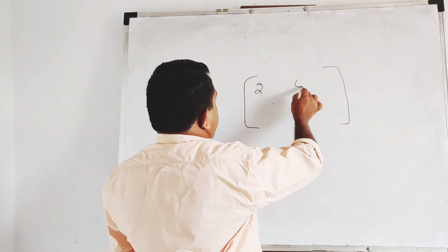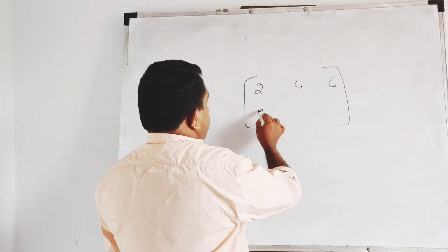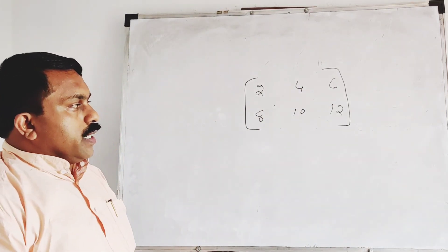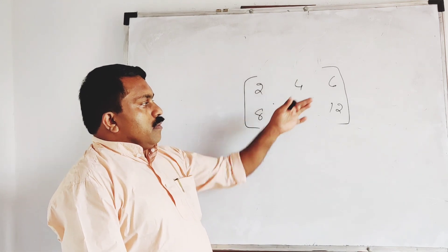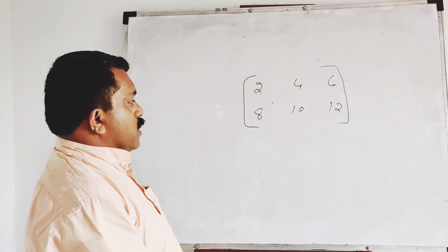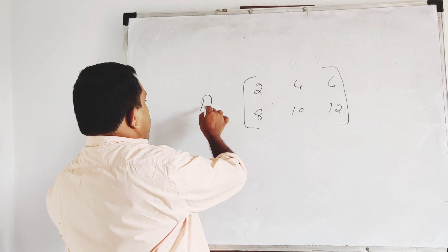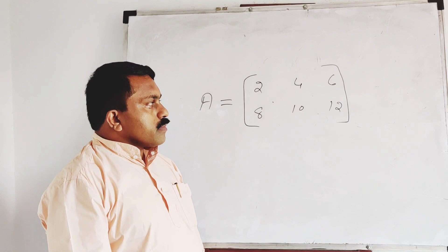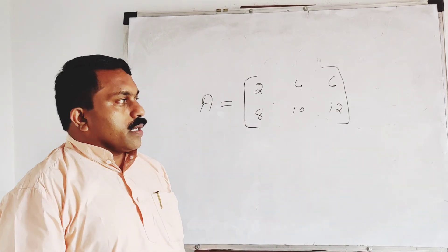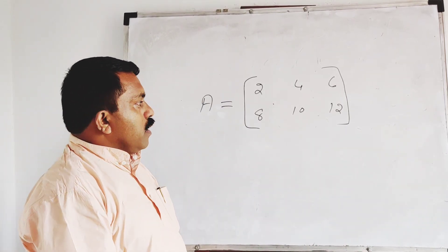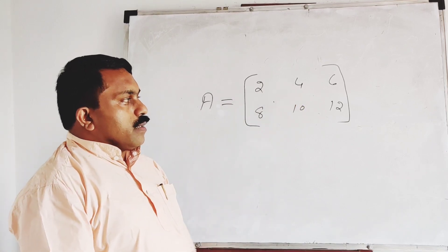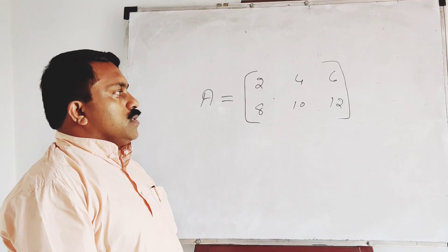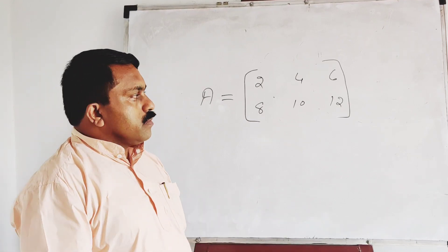This bracket is a square bracket. We can write a symbol. Now we can write a symbol: 2, 4, 6, 8, 10. Then: two, four, five, four, four. 1, 2, 1, 3, 4.